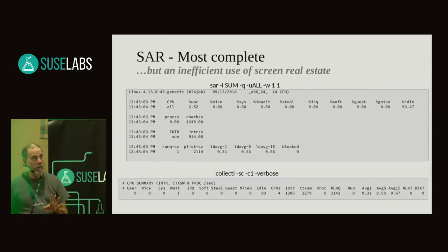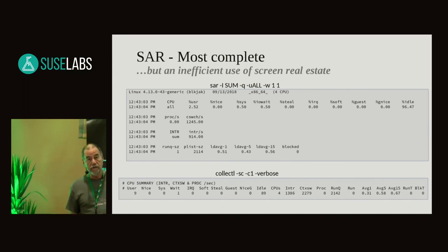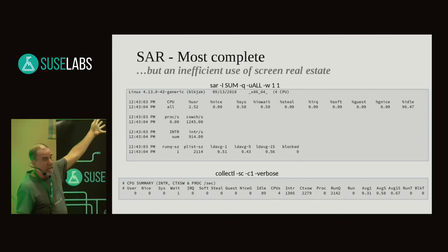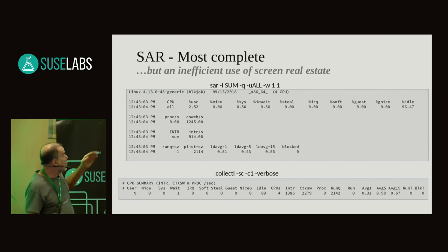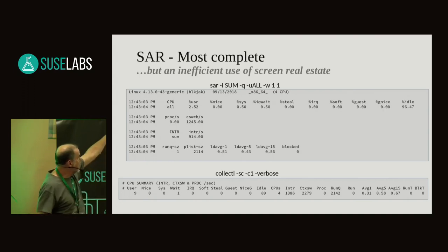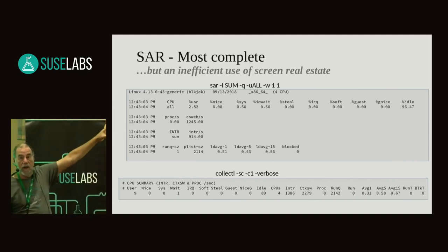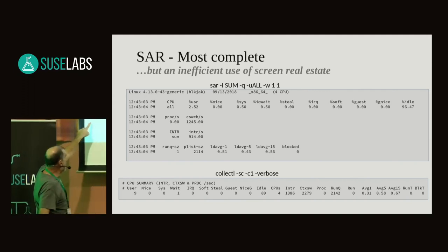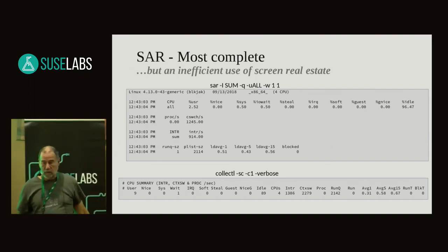Just to talk about SAR because I like to pick on it — SAR is a cool tool, but I would argue that it does a poor job with what I think of as screen real estate. For example, if I'm trying to see what my CPU utilization is, you really don't need to look at percentage utilization in hundredths of a percent. If each one of those percentages was only two digits, you could squish the columns much shorter and fit almost everything on one line. That's what I do with Collectal — the same data fits on a single line, and there's a little bit more too.